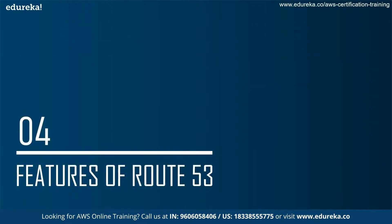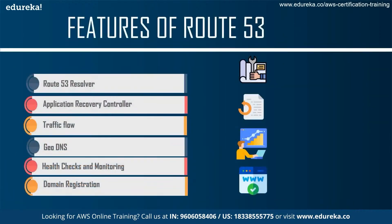Let's talk about some key features of Route 53. The first feature is Route 53 Resolver, which is used to create conditional forwarding rules and DNS endpoints to resolve custom names mastered in Amazon Route 53 private hosted zones. There are both public and private hosted zones. Route 53 Resolver is used mostly when a private hosted zone needs a certain DNS endpoint.